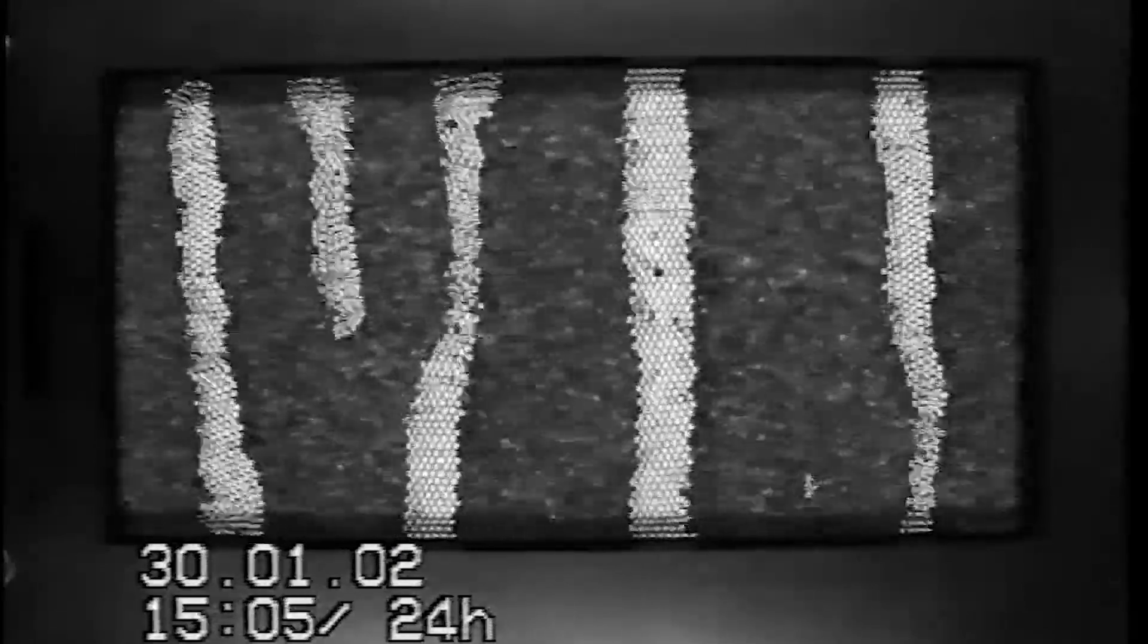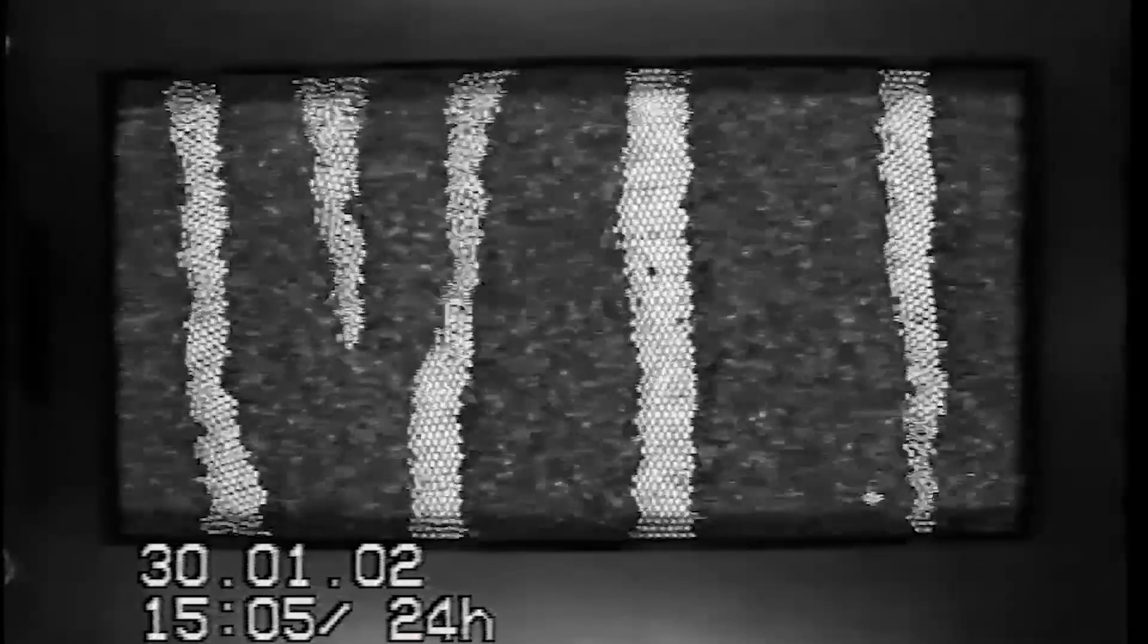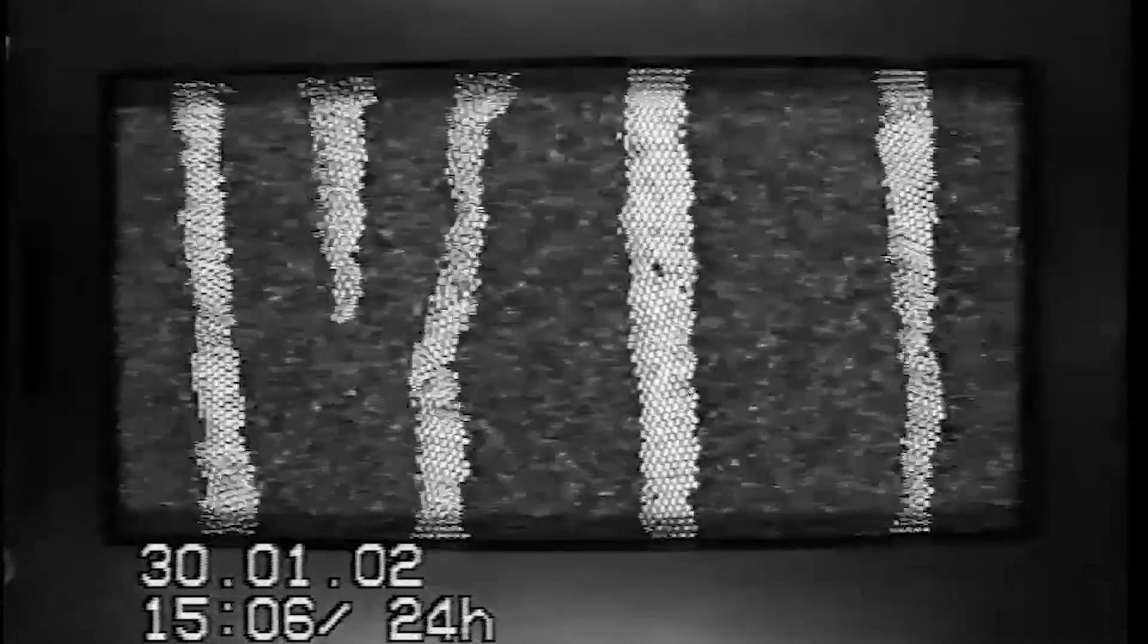When you shake it from side to side, you see that almost immediately it begins to segregate into these patterns. The stripes that you see are arranged orthogonal to the direction in which we're shaking.